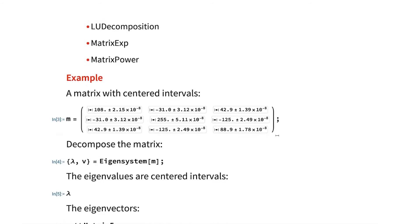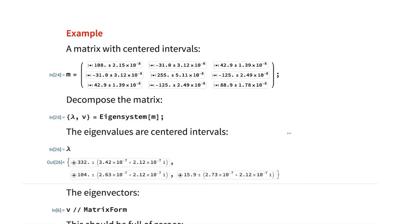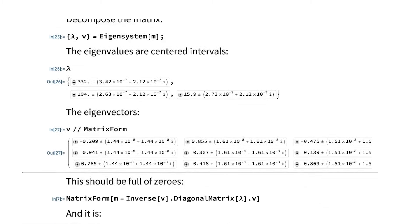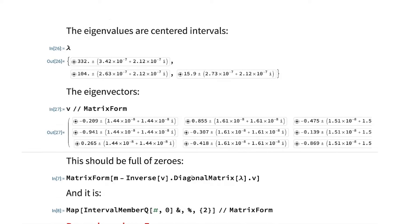So here's just a matrix with some centered intervals. And I can just give it to the eigenfunction. As you might expect, the eigenvalues have uncertainties in them. The eigenvectors have uncertainties in them.